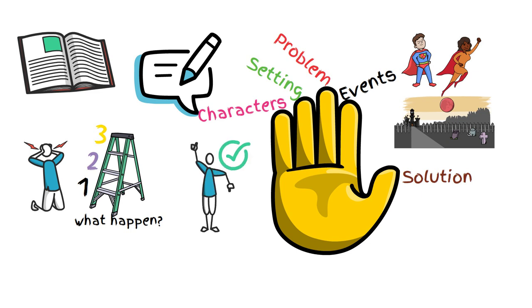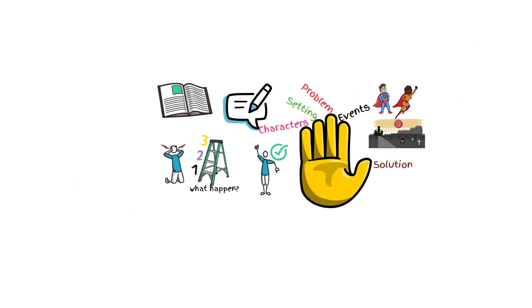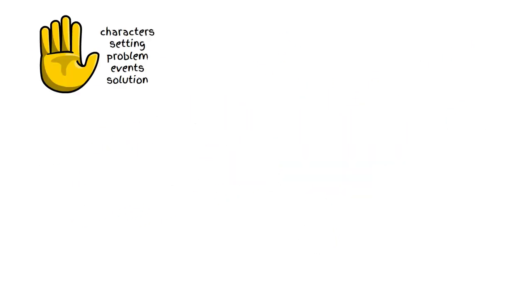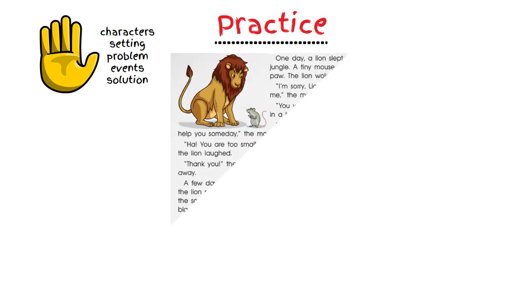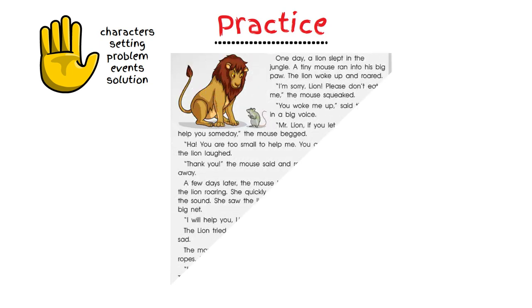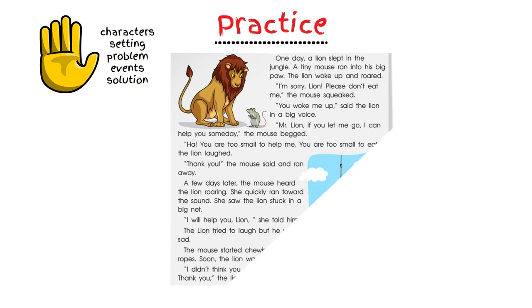Now that we know the five parts of the retelling process using our hand, let's practice a little bit. The next thing we're going to do is read a story called The Lion and the Mouse and go through the five step process of retelling.